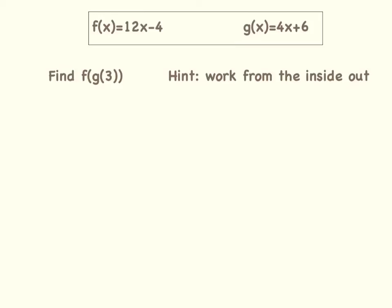In our first example, let's look at the two functions in the box. f(x) = 12x - 4 and g(x) = 4x + 6. We are going to find f(g(3)). The hint that I want to give you is to work from the inside out.